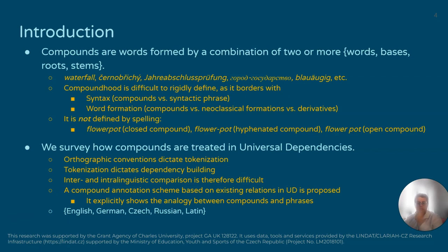We survey the handling of compounds in UD and find that tokenization is based around spelling and therefore dictates the handling of compounds at this moment. That makes inter- and intra-linguistic comparison difficult, and so we propose an annotation scheme that seeks to fix this.